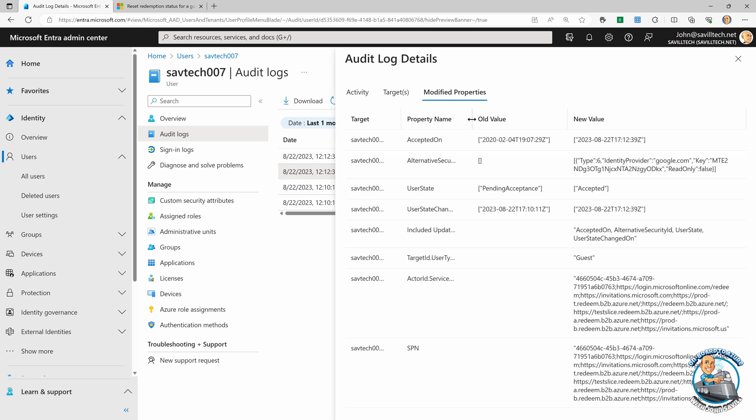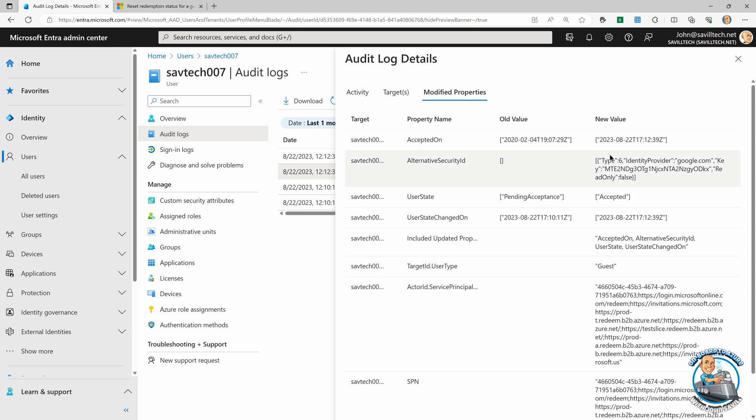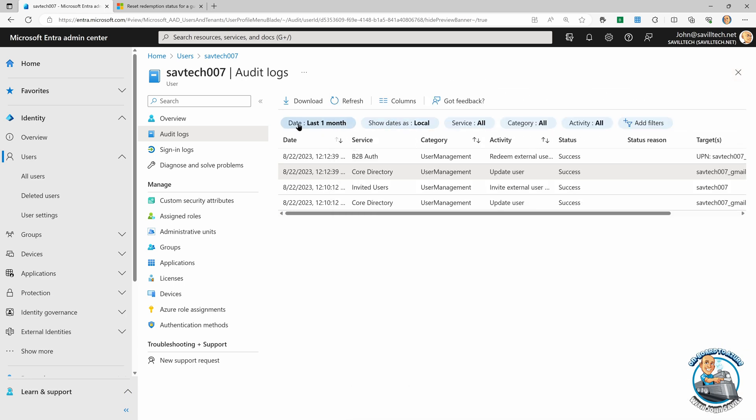It went from that alternative security ID, it put it back to the Gmail. And then it set all of those properties back to it. So the UPN wouldn't change. The object ID wouldn't change.